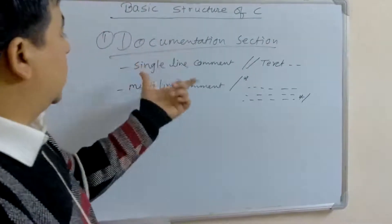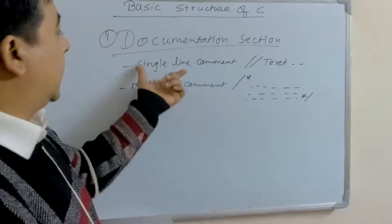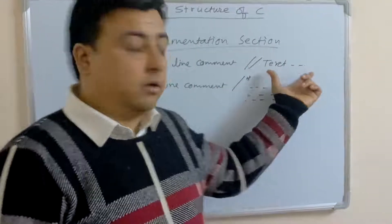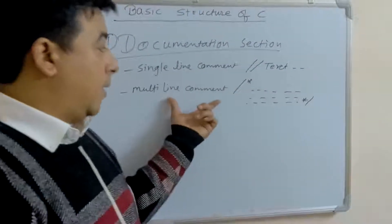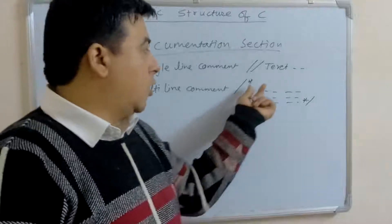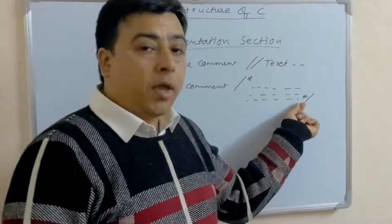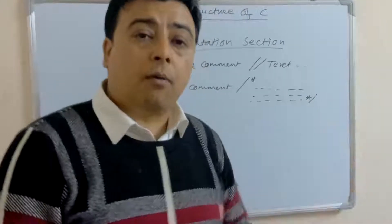Documentation is categorized in two parts. Single line comment, double forward slash, and we write the text here. Multi-line comment, we use forward slash with asterisk, write the text, and after that, we end with asterisk with forward slash.